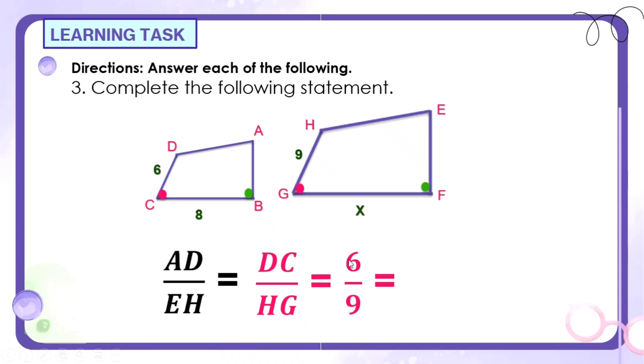And then, di-substitute natin yung ating values or length ng ating mga segments. If we have segment DC as 6, dahil dito, and segment HG is 9, kukunin natin yung kanyang tinatawag na scale factor or pwede kasi itong ma-lowest term. 6 over 9, pwede mo parehong i-divide sa 3. Pag dinivide natin ito sa 3, ang answer is 2. Then, ito, 9 divided by 3 is 3. We have 2 thirds para sa ratio ng segment DC over segment HG. And ito na nga yung sinasabi natin yung scale factor. Yung scale factor ay nakukuha natin sa ratio ng mga corresponding sides.